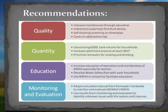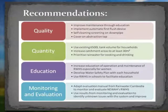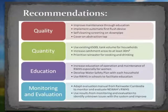This simple diagram summarises the key recommendations in the report, shown in four key areas highlighting the most important modifications to improve the use of rainwater harvesting systems. To improve water quality, it is important to improve maintenance, change the first flush device, include angled screens on downpipes and cover abstraction taps. To increase the water supply, it is recommended to ensure roof areas are at least 30 metres squared, 6,500 litre tanks are used, and rainwater is prioritised for cooking and drinking demands, ensuring that the key quality barriers are implemented.